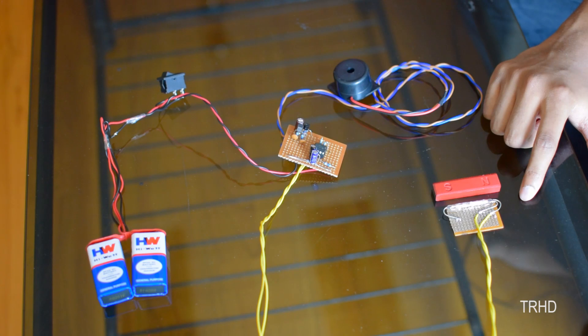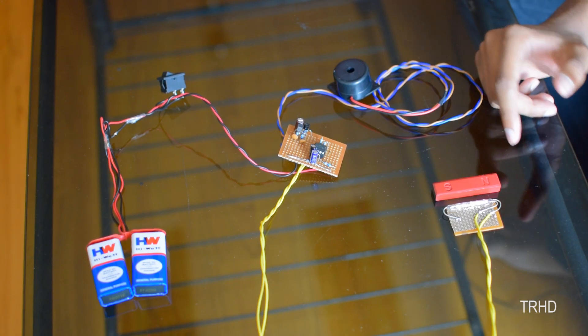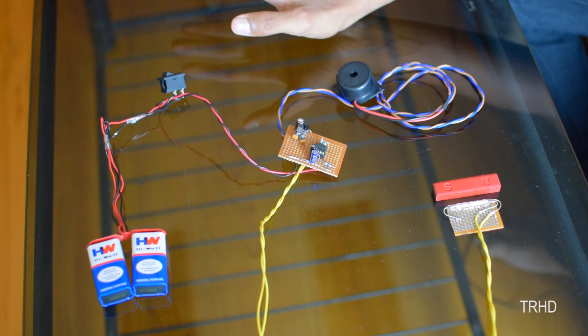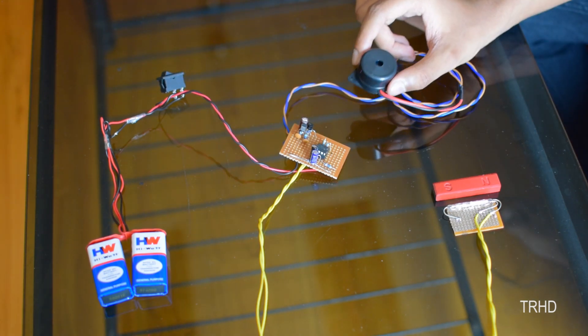You have to fix this reed switch and the magnet to the door from inside your house, and the buzzer and the switch should be placed outside your house where nobody can find it. The buzzer should be placed in such a place outside your home such that everybody can hear it clearly.